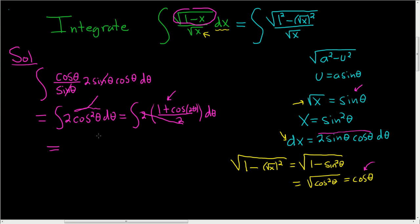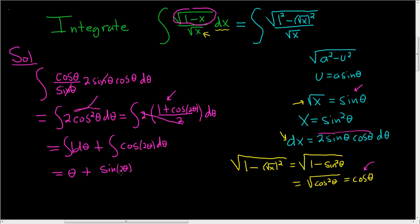Breaking up the integral, we have the integral of d theta plus the integral of cosine 2 theta d theta. Integrating the first term gives theta. A function whose derivative is cosine is sine, so the second term gives sine of 2 theta divided by 2, plus c.